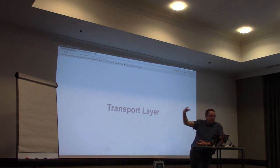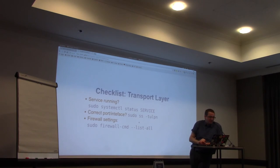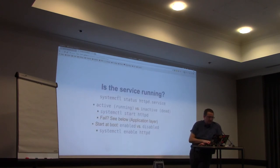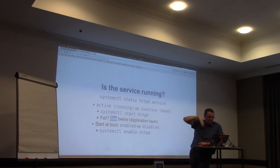The next step is the transport layer. The idea is we're setting up a network service — in this case, Apache. On the transport layer, we check the state of the HTTP service. There are three things to check: is your service running at all? Is it listening on the correct ports and interfaces? And are your firewall settings correct? The first command, systemctl status, will tell you whether the service is running — either active/running, which is good, or inactive/dead. Try to start it with systemctl start httpd. If it fails, you'll have to check the configuration.